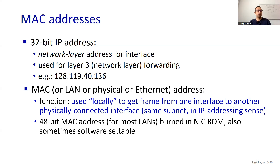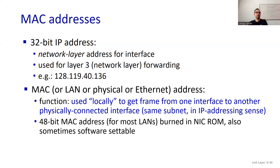We use a 48-bit MAC address for most local area networks. It is burned in your network adapter ROM, and sometimes it is software settable. Every manufacturer puts their unique MAC address on their device. Since there are many different manufacturers around the world, to avoid collisions, you pay a small fee to IEEE and buy a range — like a 24-bit range — for your devices. This way you can produce thousands of devices with different MAC addresses. Just by looking at the first part of a MAC address, you can determine which manufacturer produced it.